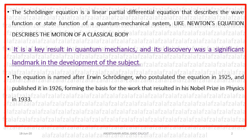First of all, it was Erwin Schrödinger who first postulated this equation in 1925, and that won him the Nobel Prize in Physics in 1933.